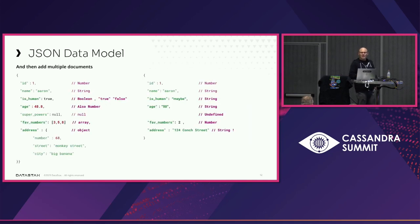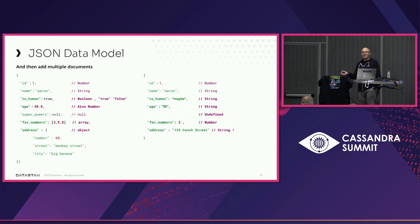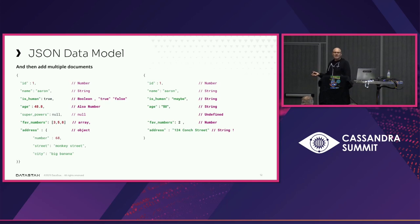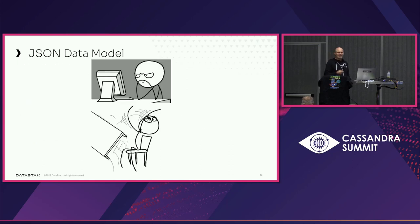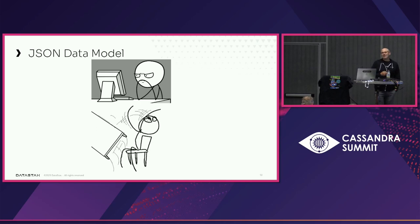When we try to go across documents, it gets crazy. In the document on the left, age is the number 48.8. In the document on the right, age is a string. So which is it — a number or a string? Well, there are no rules. That's the situation we have.